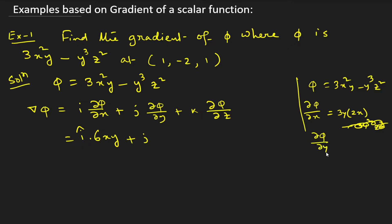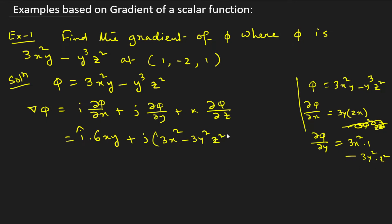So we get 6xy for the i-cap term. Now for ∂φ/∂y: in the first term 3x² is constant and the derivative of y is 1, giving 3x². In the second term, differentiating y³ gives 3y², and z² remains as is. So ∂φ/∂y = 3x² − 3y²z².